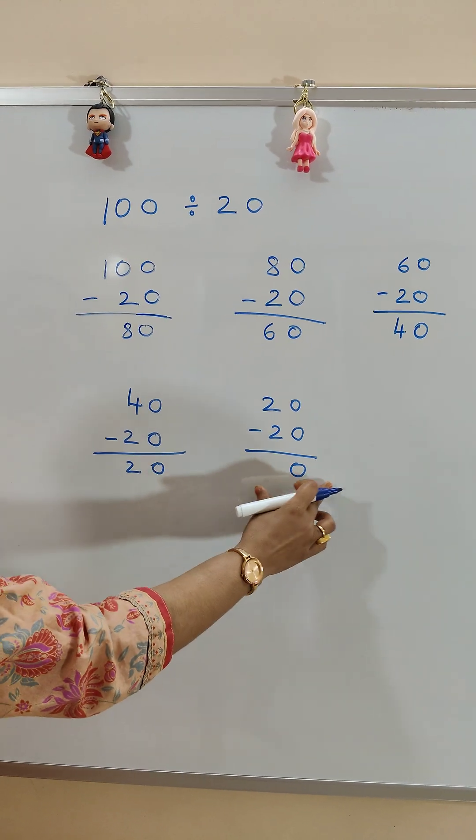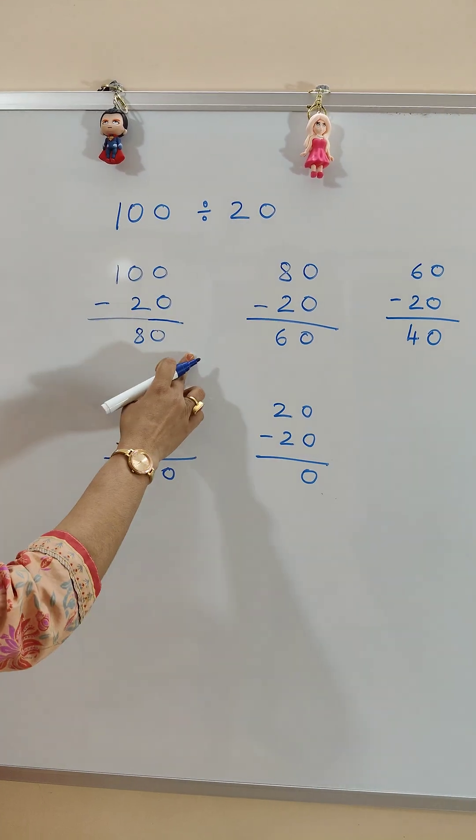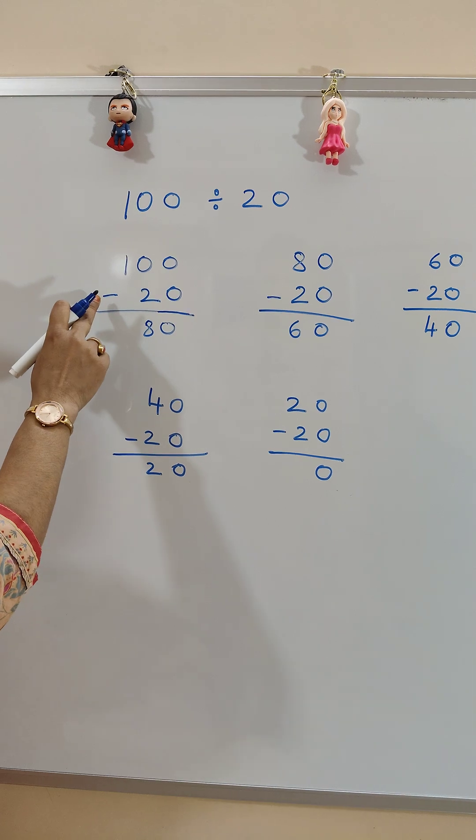So we got 0 over here. So we will stop here. Let's count how many times we subtracted 20.